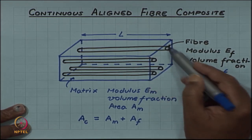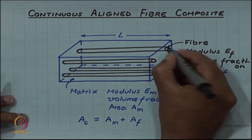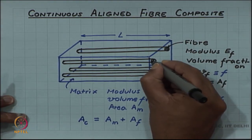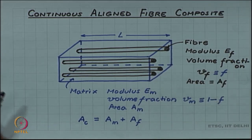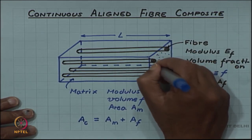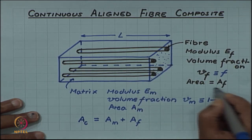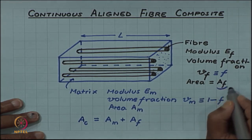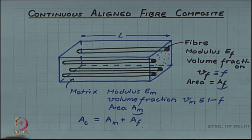On the cross-sectional area, a part of the area is taken by the fiber, while the rest of the area is taken by the polymer. We separately denote the area of the fiber as A_f and the area of the matrix as A_m. So the overall area of the composite A_c will be the sum of these two areas.